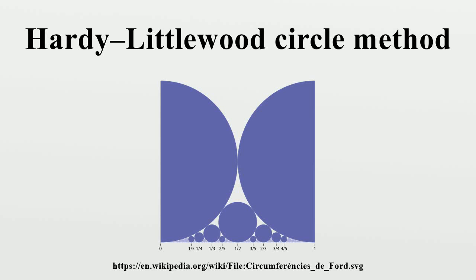In mathematics, the Hardy-Littlewood circle method is a technique of analytic number theory. It is named for G. H. Hardy and J. E. Littlewood, who developed it in a series of papers on Waring's problem.